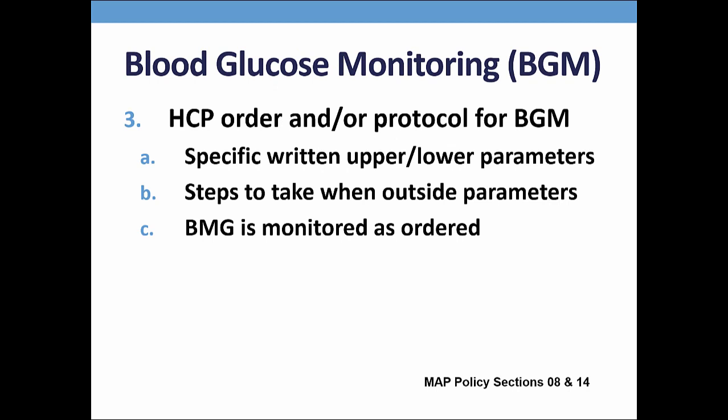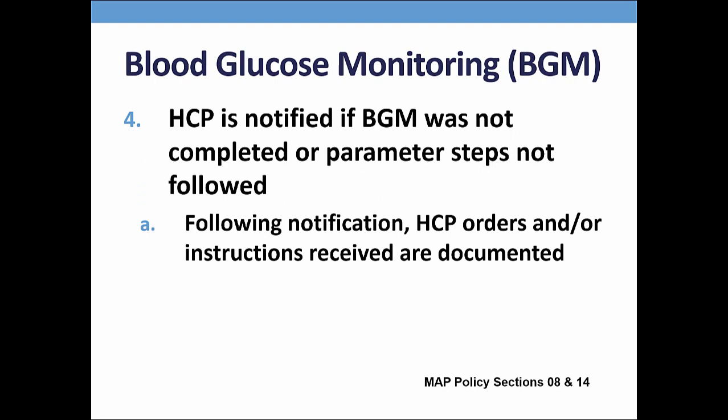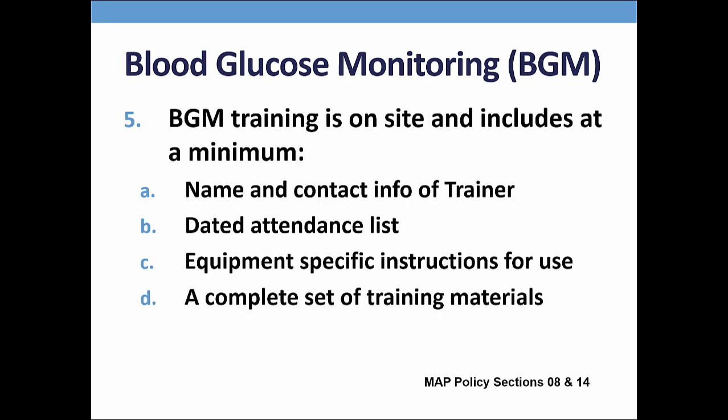If blood glucose testing is done in your program, there must be a corresponding HCP order with upper and lower parameters and steps for staff to take when the reading is outside of the parameter. If the blood glucose monitoring is not completed or a parameter is not followed, the HCP must be notified, instructions obtained and followed, and documentation completed. The policy manual outlines blood glucose training requirements. The training must be conducted by a licensed nurse, pharmacist, or HCP. Staff must be MAP certified to perform blood glucose testing. I will ask to see documentation of training as listed on your screen.